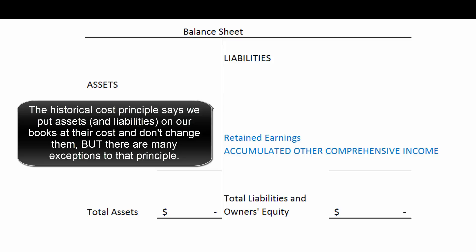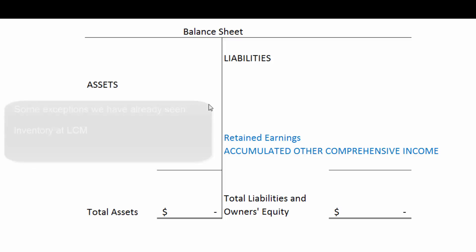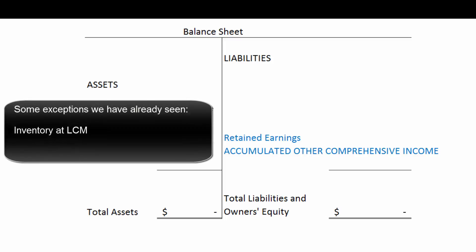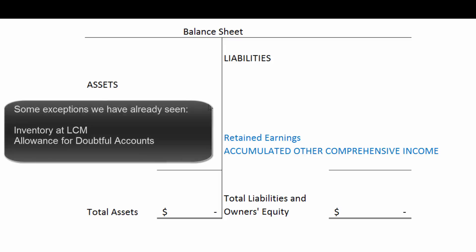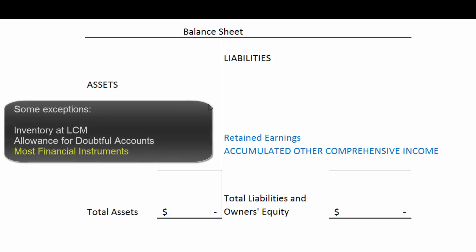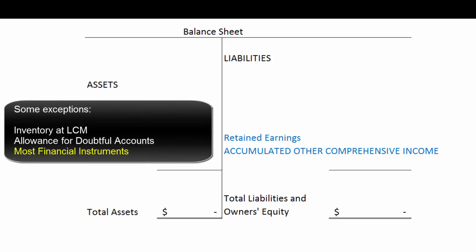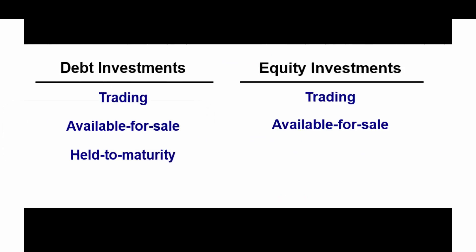We've already seen some exceptions to that. For example, inventory is on our books at the lower of cost or market value, so we'll write that down. We've also seen the allowance for doubtful accounts that writes down our accounts receivable. Now we're going to talk about putting financial instruments like stocks and bonds on our books at original cost and then adjusting them to fair value after that.